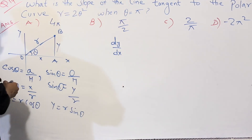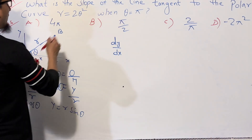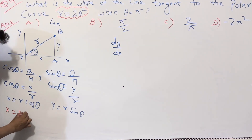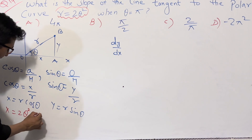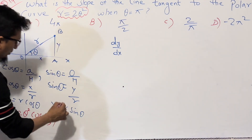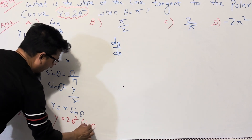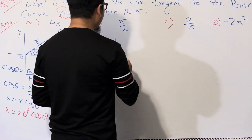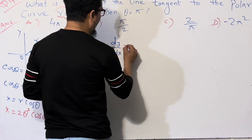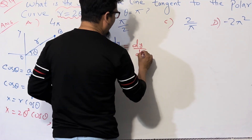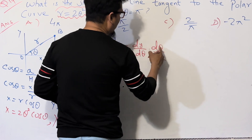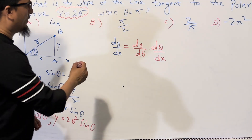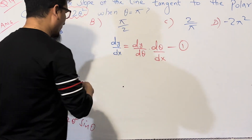Since r is given as 2θ², we substitute: x = 2θ² cos θ and y = 2θ² sin θ. Now we have x and y both in terms of θ. To find dy/dx, we use the chain rule: dy/dx = (dy/dθ) · (dθ/dx), where the dθ terms cancel to give dy/dx.